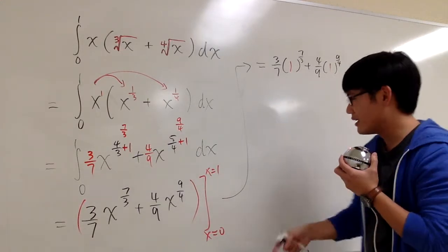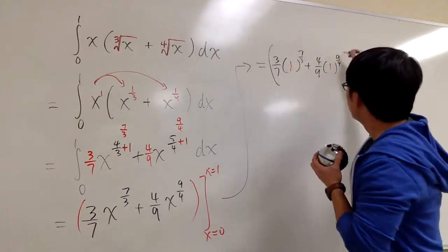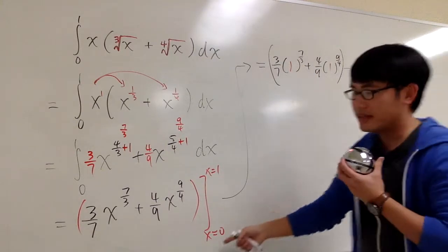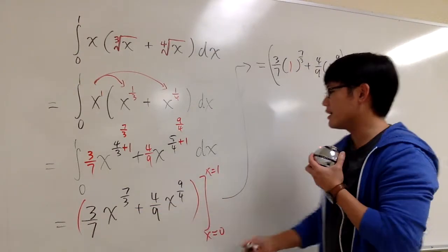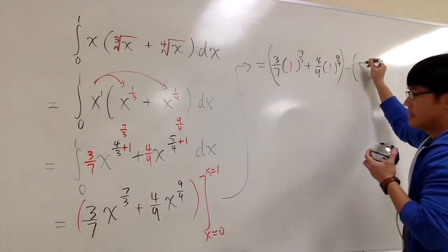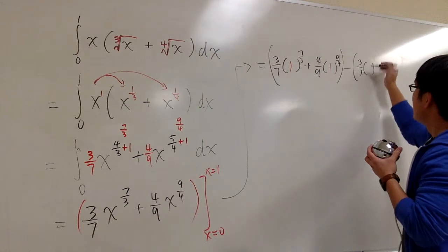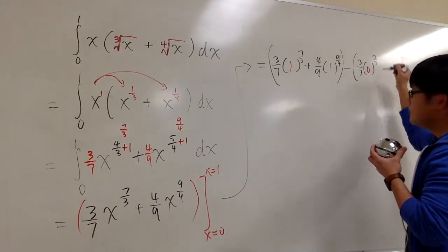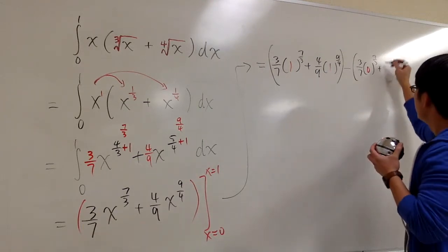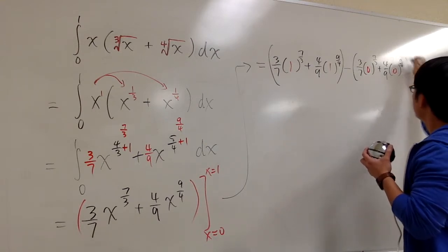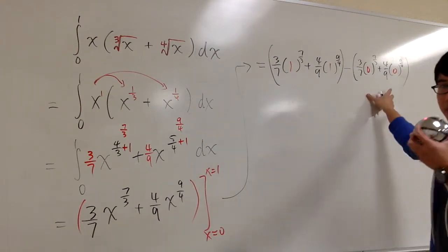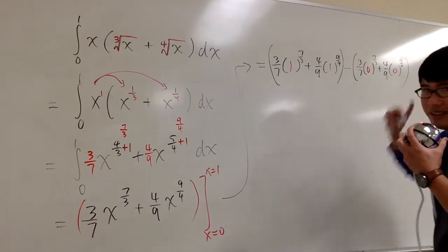Just to show you guys the work, this is the first part. I have to subtract, plug in 0 into there. Plug in 0 into this x, and plug in 0 into that x. So this is 3 over 7 times 0 to the 7 over 3, and then plus 4 over 9 times 0 to the 9 over 4. But this part doesn't matter because it's 0. But it's good to show all the work.